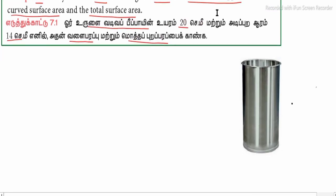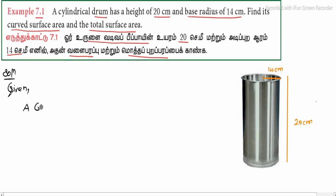This is the height, 20 centimeters. At the end, we have to find curved surface area and total surface area. Solution: First, given - radius 14 cm, height 20 cm. We know that curved surface area of cylinder is 2πrh square units.